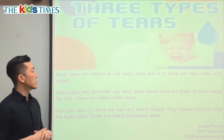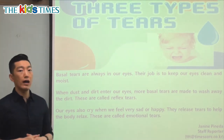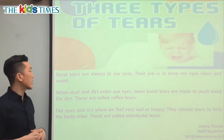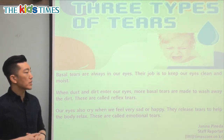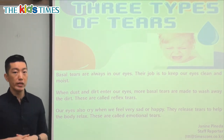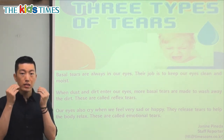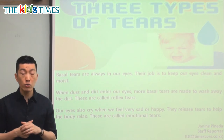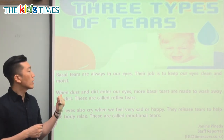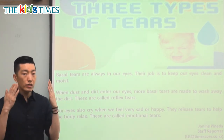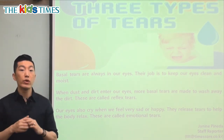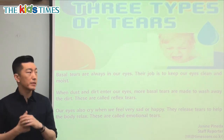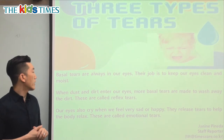Basal tears are always in our eyes. This type of liquid is always there. Their job is to keep our eyes clean and moist. In our eyes, it's not dry — imagine if your eye was very dry, it would hurt when we blink. So our eyes are always a little bit moist and wet so that they can stay clean and moist.